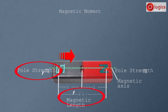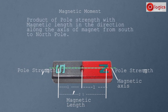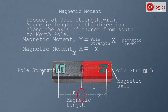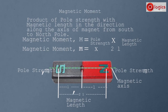You should remember that the magnetic moment direction is south to north. You can define magnetic moment as the product of pole strength with magnetic length in the direction along the axis of the magnet from south to north pole. Therefore, magnetic moment M equals pole strength m into total magnetic length 2L. If you know the magnetic length and pole strength of a magnet, you can calculate its magnetic moment.